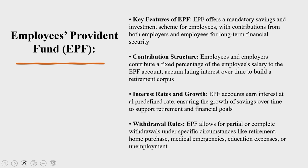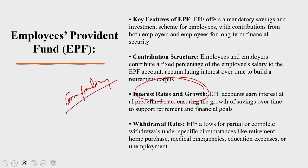The contribution structure involves employee contribution and employer contribution. When you look into interest rate growth, there are regular contributions coming in, and the declared interest rate significantly impacts the growth of the corpus. Higher interest rates lead to faster accumulation, and the longer an employee contributes to the EPF scheme, the larger the corpus becomes due to the power of compounding. This makes the life of a worker after retirement or during an emergency worthwhile.